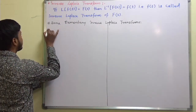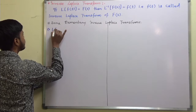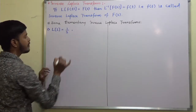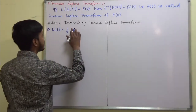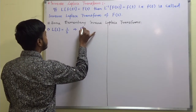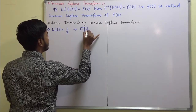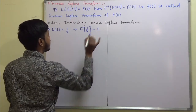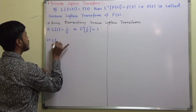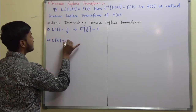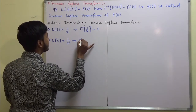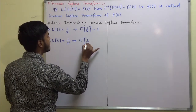We know that the Laplace transform of 1 is 1/s. So this implies the inverse Laplace transform of 1/s is equal to 1. Likewise, the Laplace transform of t is 1/s², so this implies L inverse of 1/s² is equal to t.